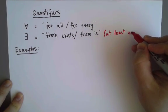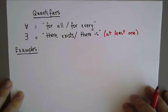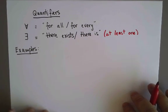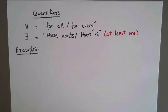For example, if I say there is a solution to this equation, I mean there is at least one solution. There could be more than one. Let's see some examples of these symbols in use.